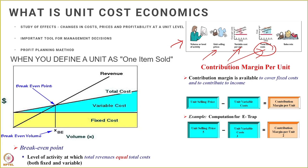An example of fixed costs is management salaries. For instance, the salaries of the CEO are going to be the same no matter what the business is doing, at what level it's performing, or how many units are being sold. Rent, phone utilities, selling and general administration expenses — these are all going to be more or less the same for a range of levels of activities, and therefore they are identified as fixed costs. Investments in property, plant, and equipment are also fixed costs, because these investments are made upfront and are sunk — whether you sell a single unit of output or not, these costs have been incurred.